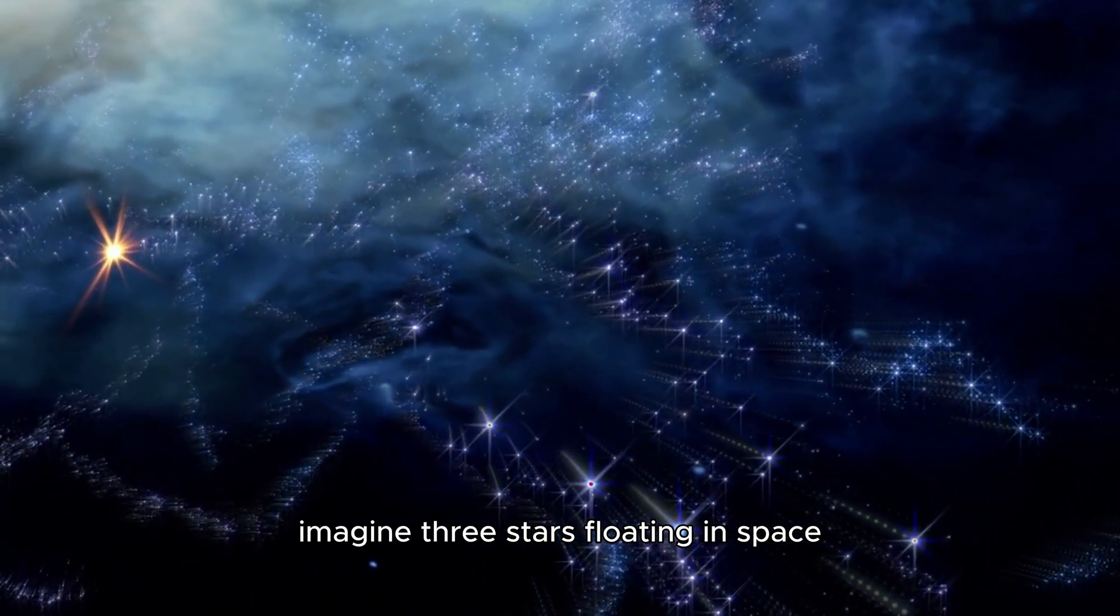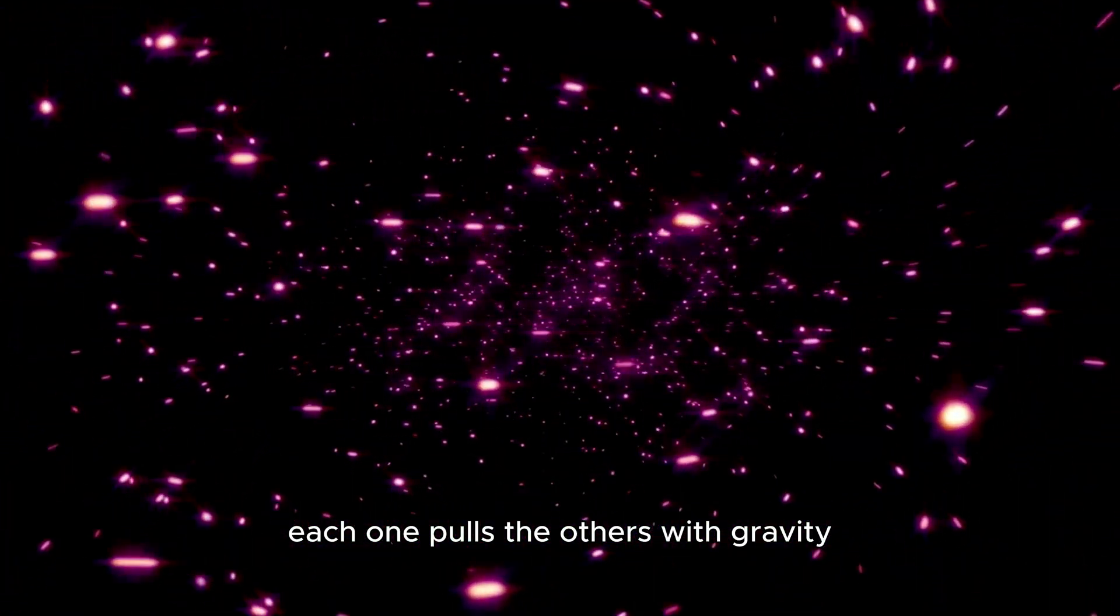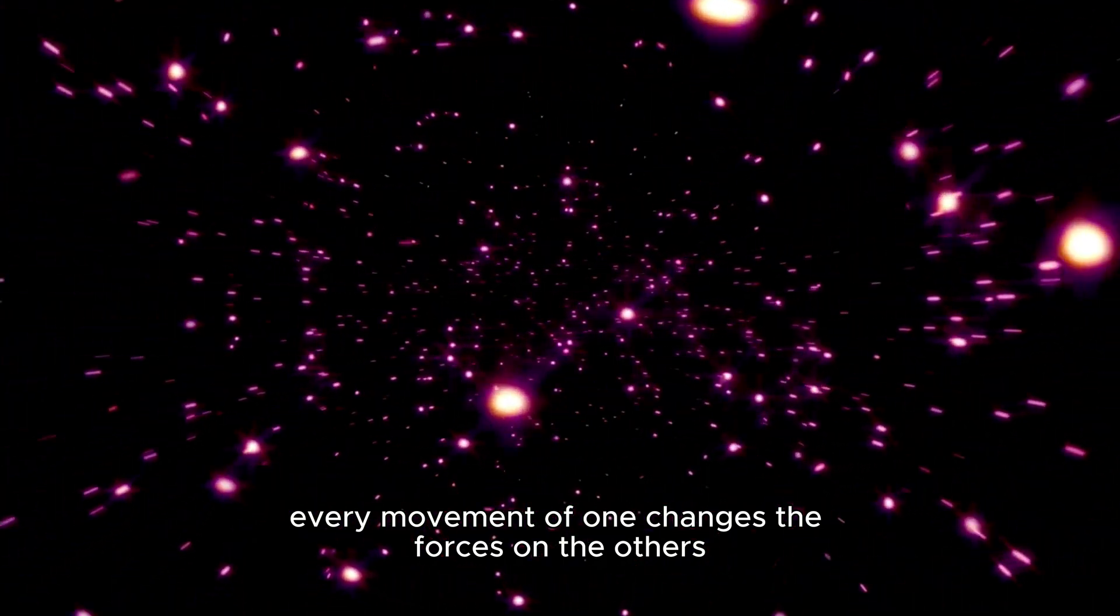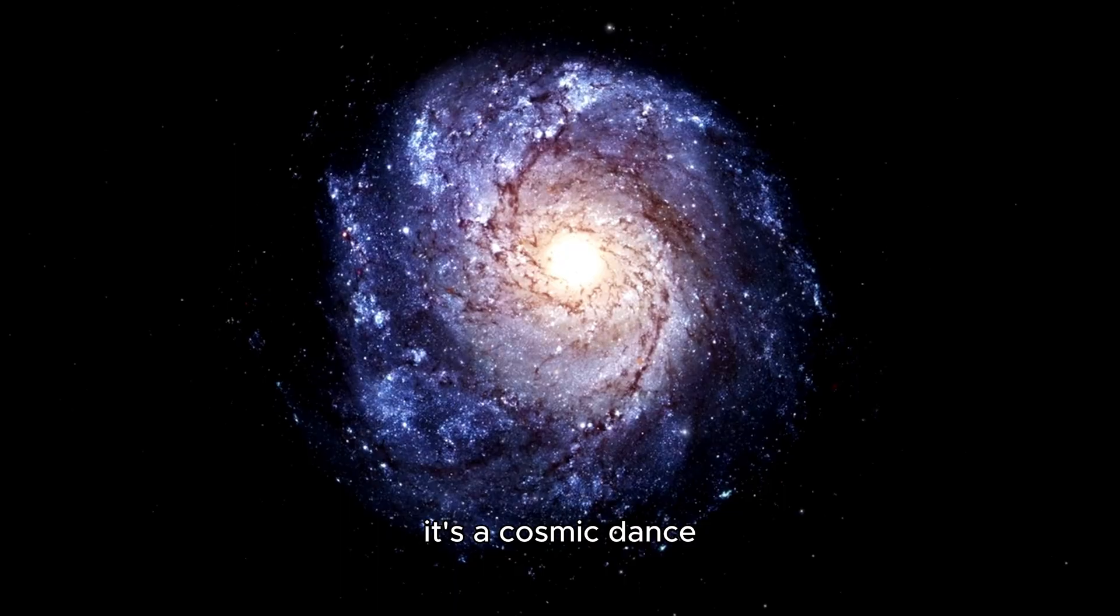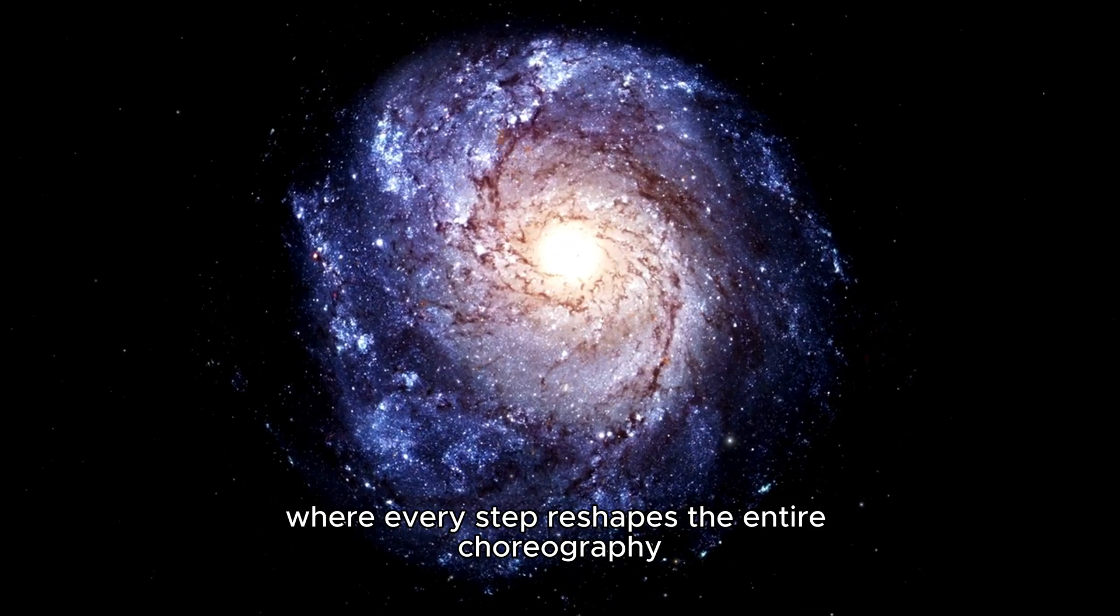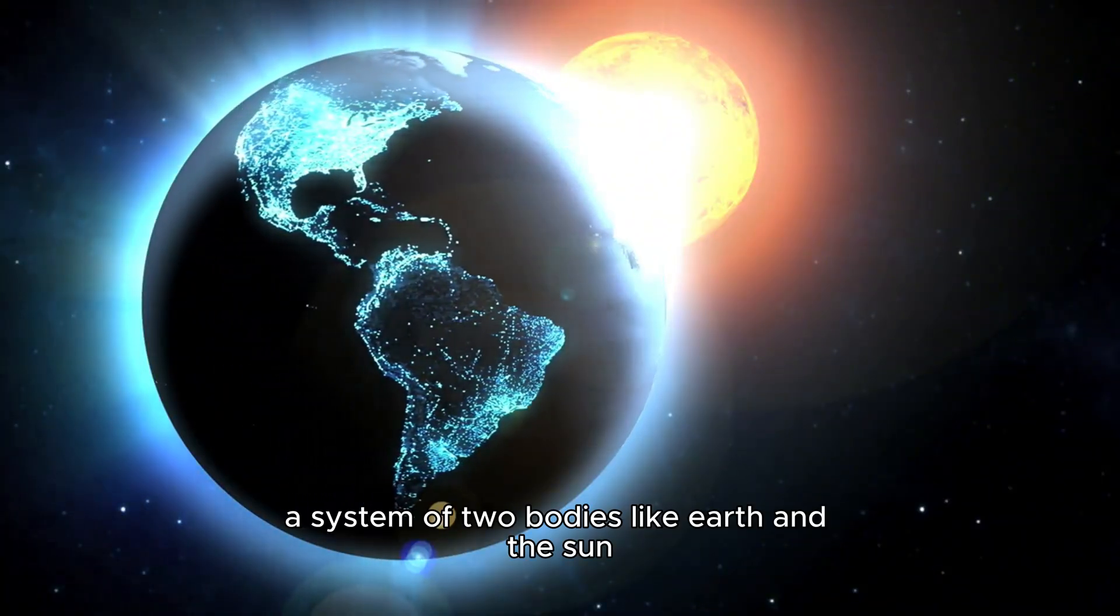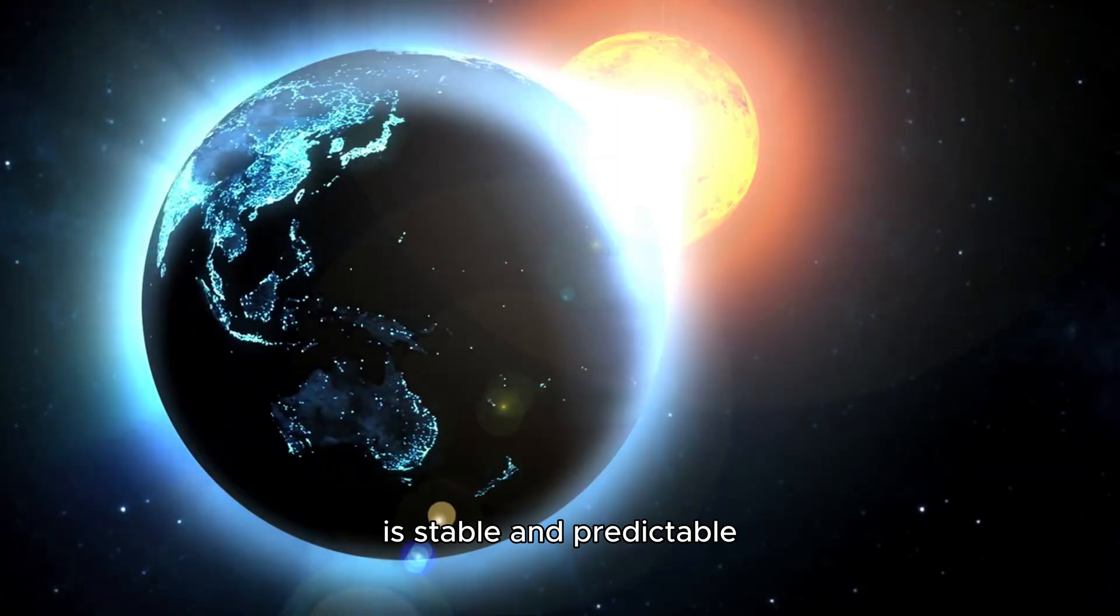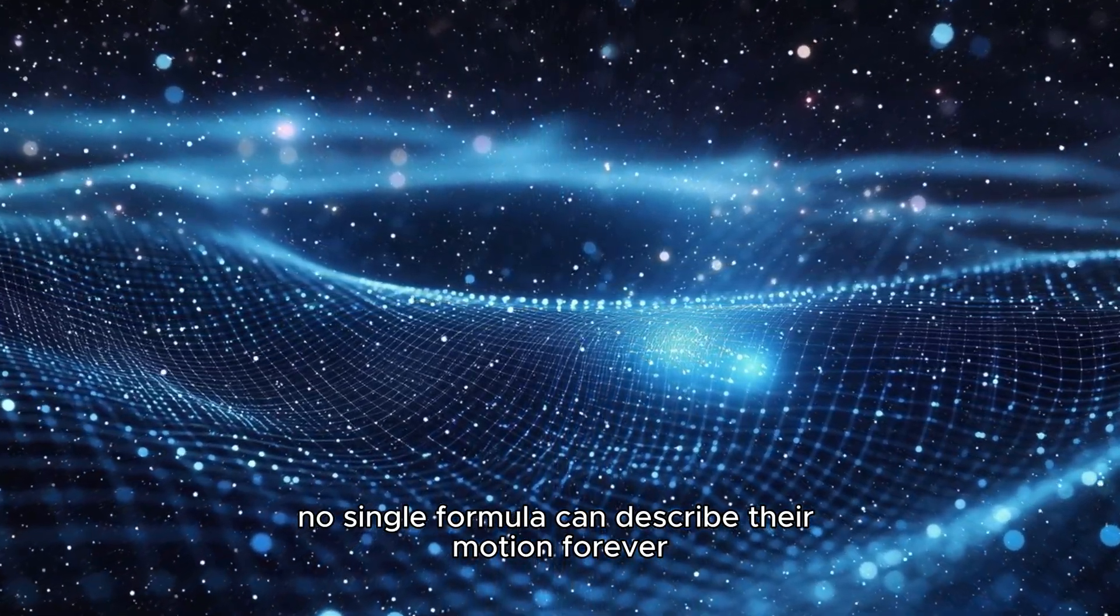Imagine three stars floating in space. Each one pulls the others with gravity. Every movement of one changes the forces on the others. It's not a simple circle anymore. It's a cosmic dance, where every step reshapes the entire choreography. A system of two bodies, like Earth and the sun, is stable and predictable. But with three, no single formula can describe their motion forever.